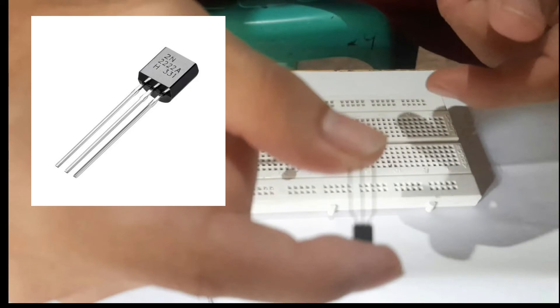The 2N2222 is a common NPN bipolar junction transistor or BJT, used for general purpose low power amplifying or switching applications. It is designed for low to medium current, low power, medium voltage, and can operate at moderately high speeds.